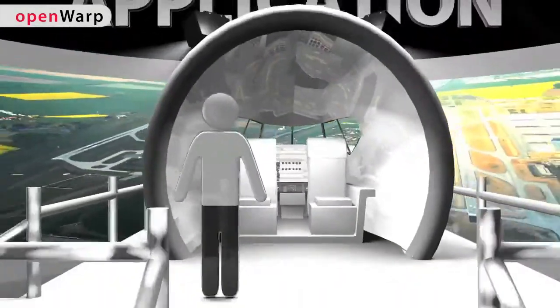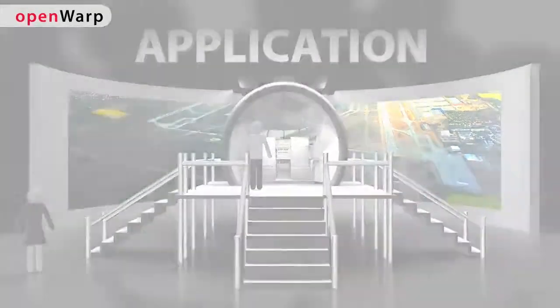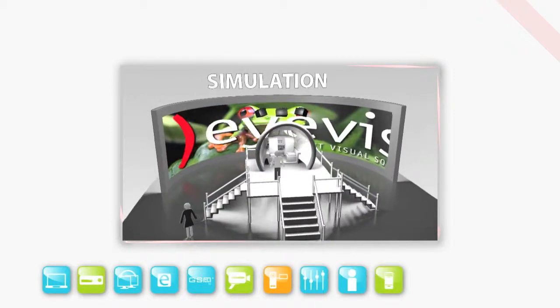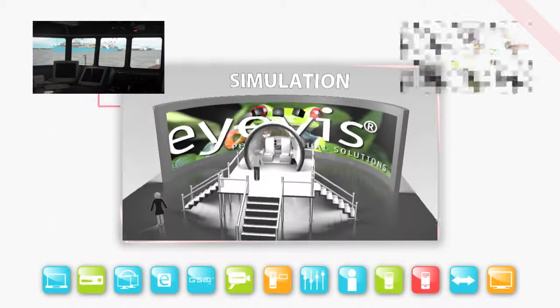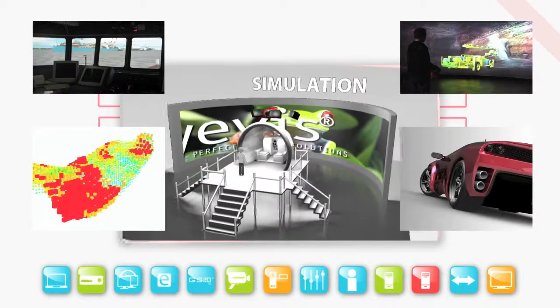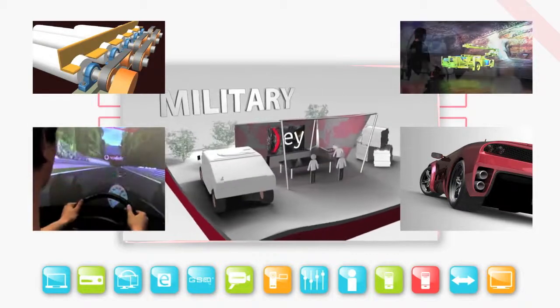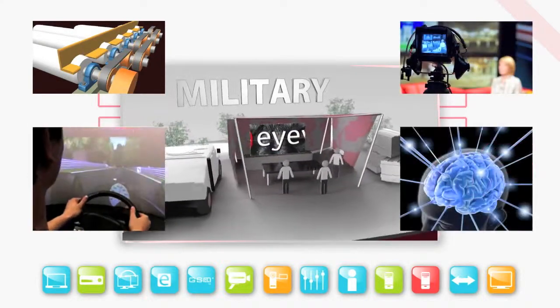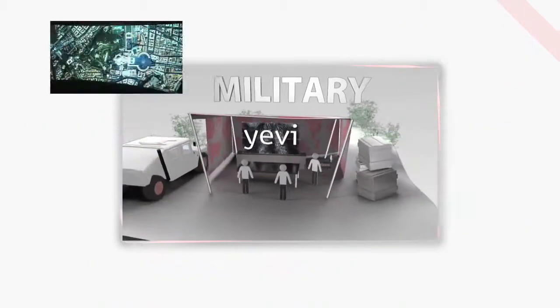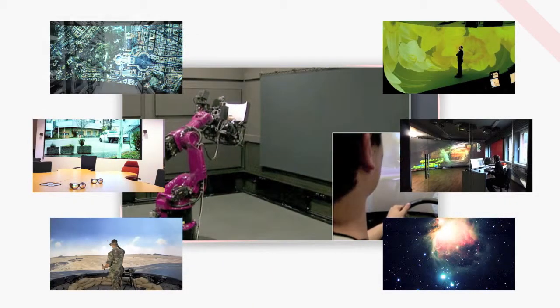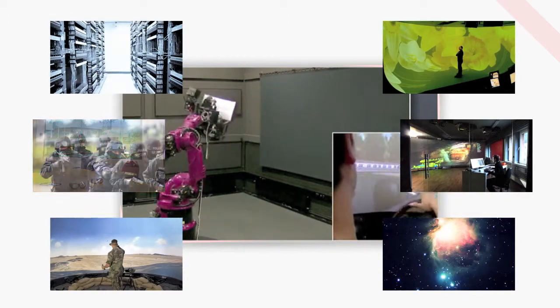OpenWarp is the ideal solution for projection applications where cost-effective and highly flexible real-time image correction is required. Use the precise and user-friendly geometric correction to adapt your virtual environments to any screen format, and have your application or image signal displayed by input from several projectors at the same time. With OpenWarp from iVis, you decide for a high-quality image correction solution for your virtual reality simulation application or presentation.